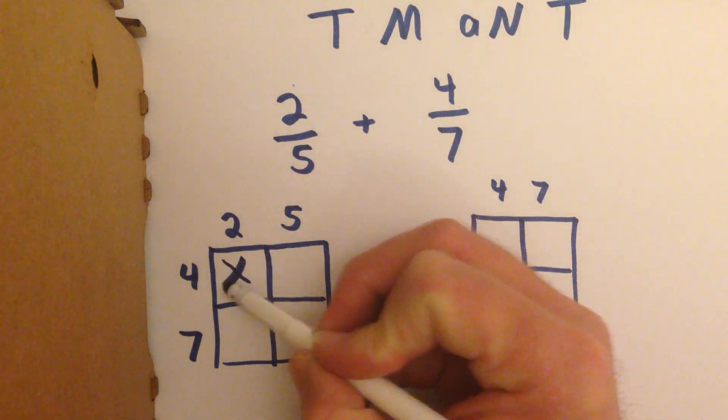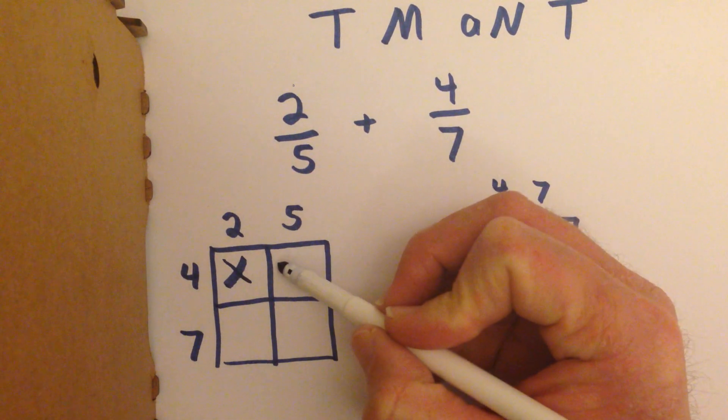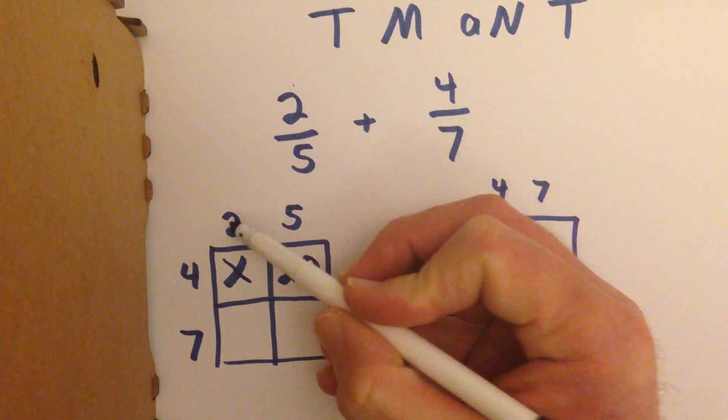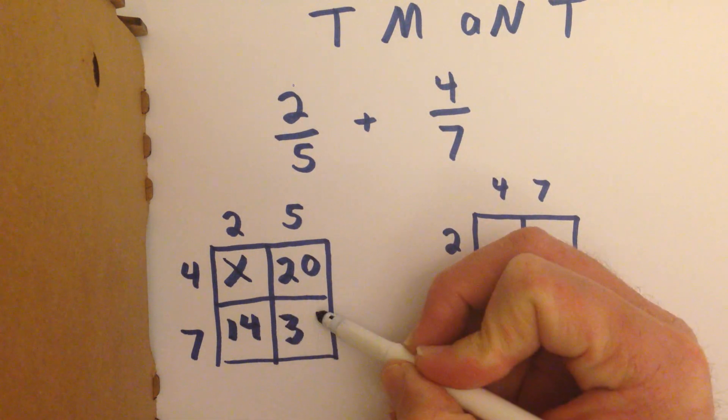We cross out the first square, we don't use that one. And then this is a multiplication grid, so 4 times 5 goes here, 2 times 7 goes here, and 7 times 5 goes here.